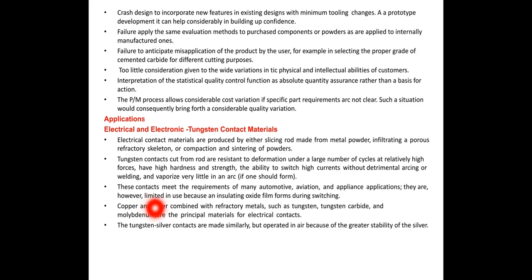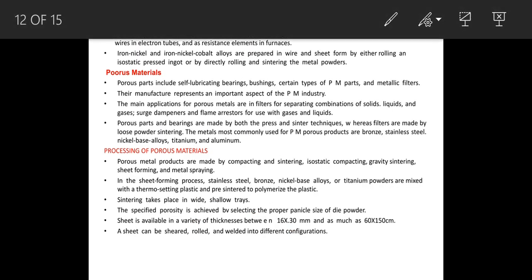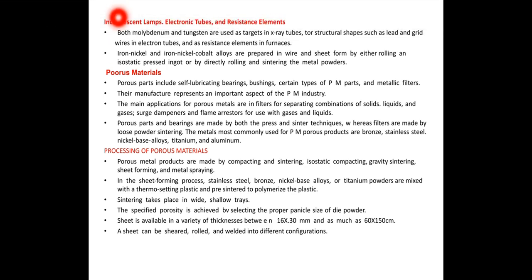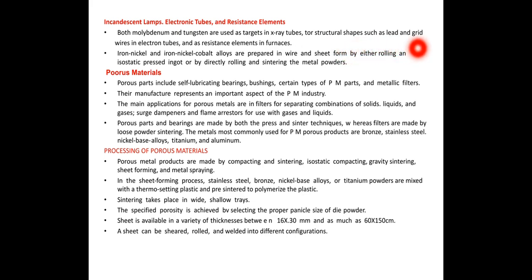Copper and silver combined with refractory metals such as tungsten, tungsten carbide, and molybdenum are the principal materials for electrical contacts. Both molybdenum and tungsten are used as targets in X-ray tubes, for structural shapes such as leads and grid wires in electron tubes, and as resistance elements in furnaces.